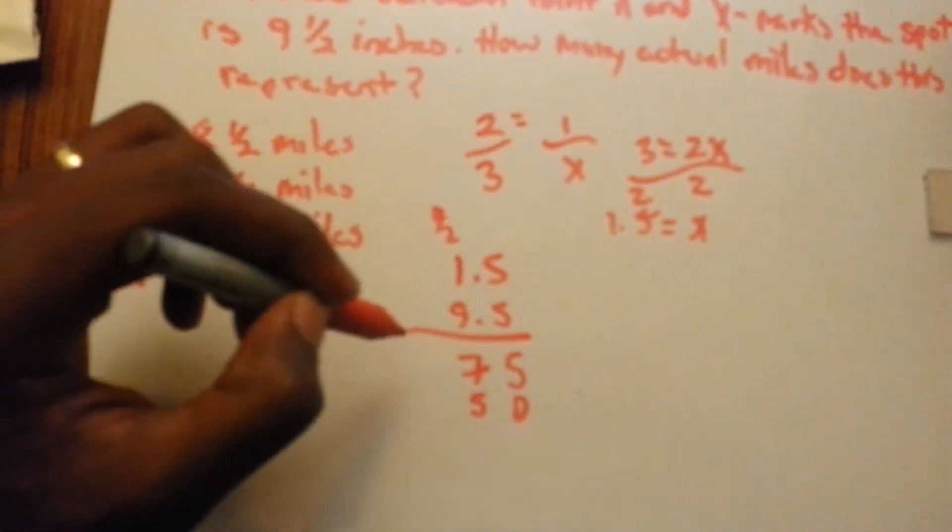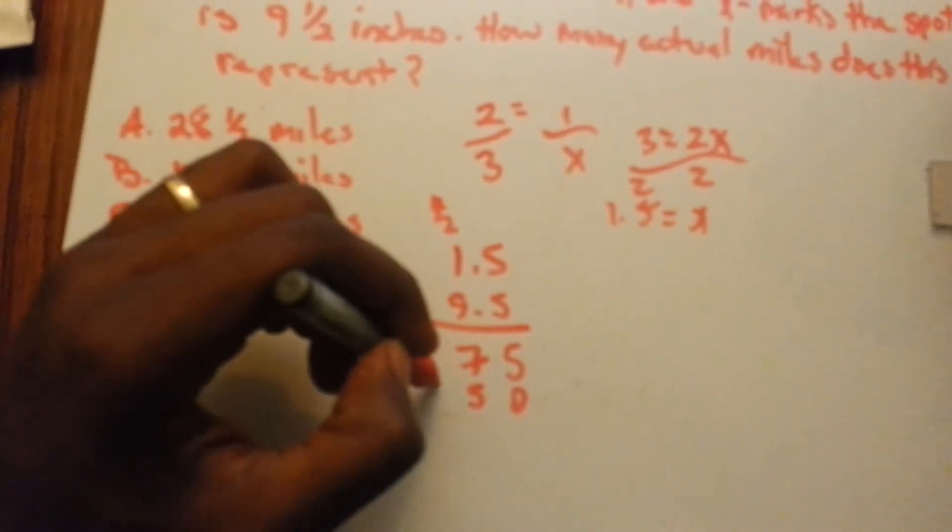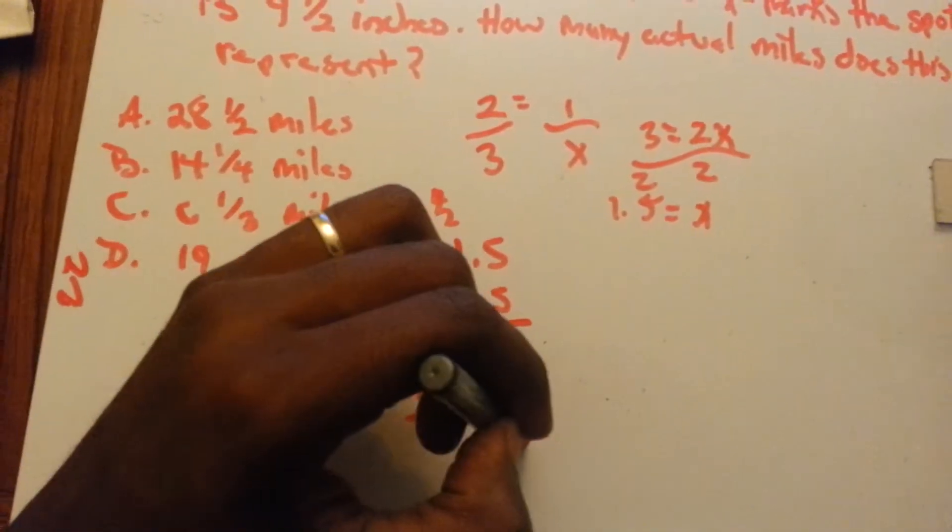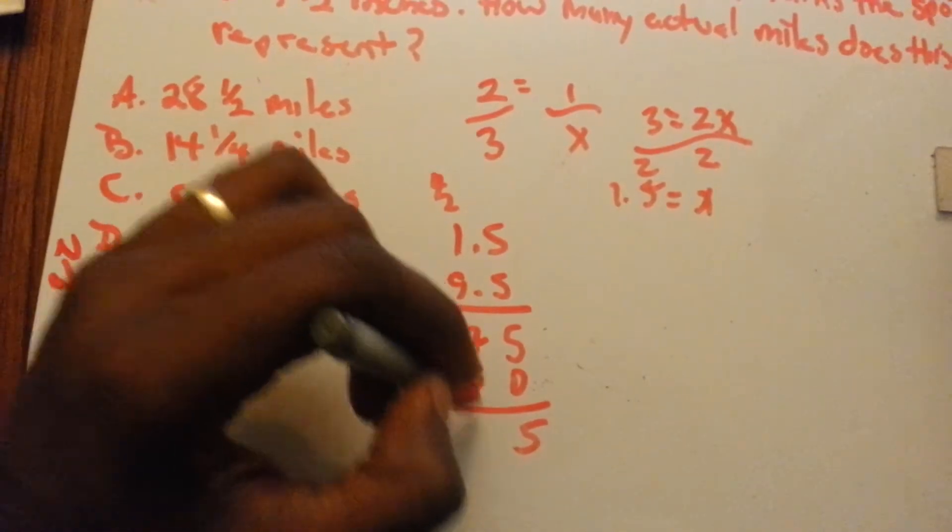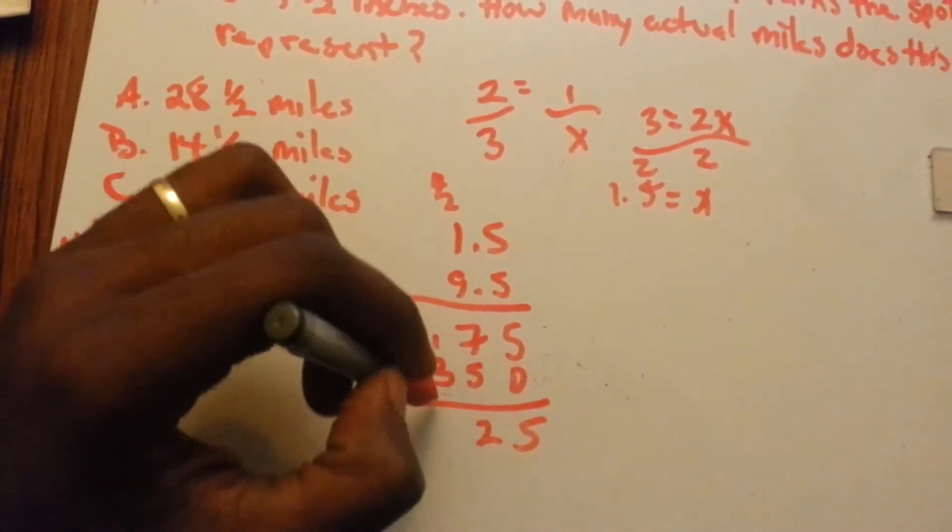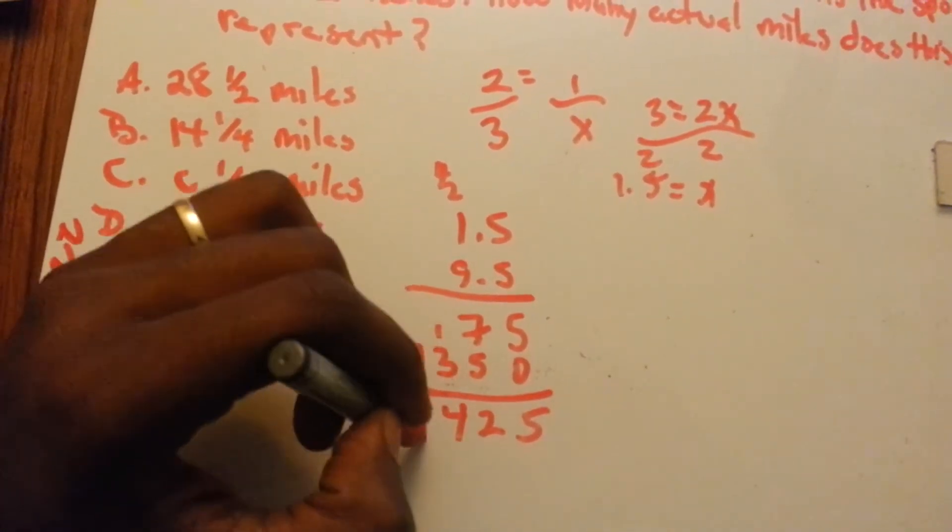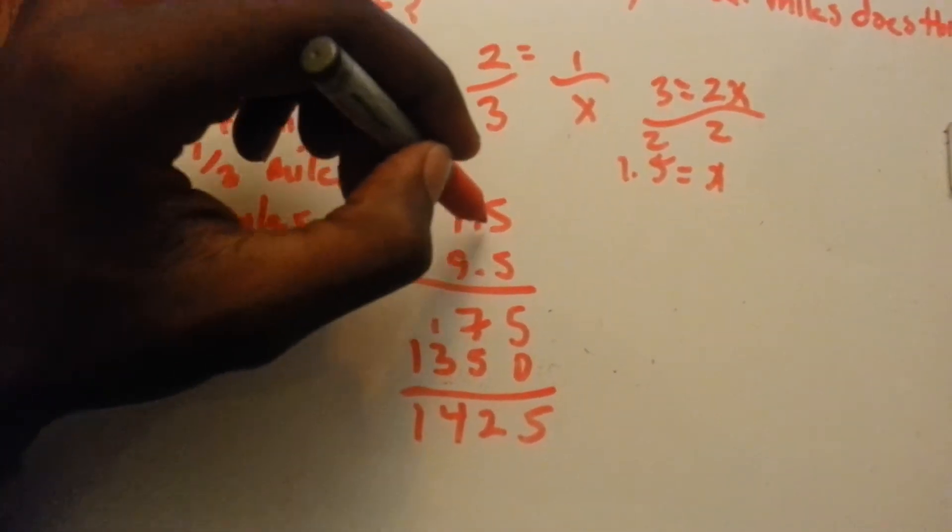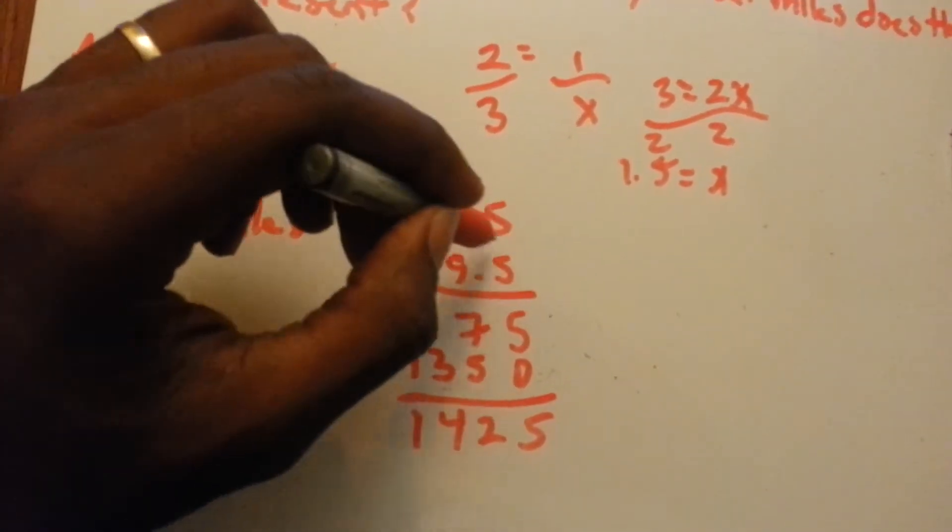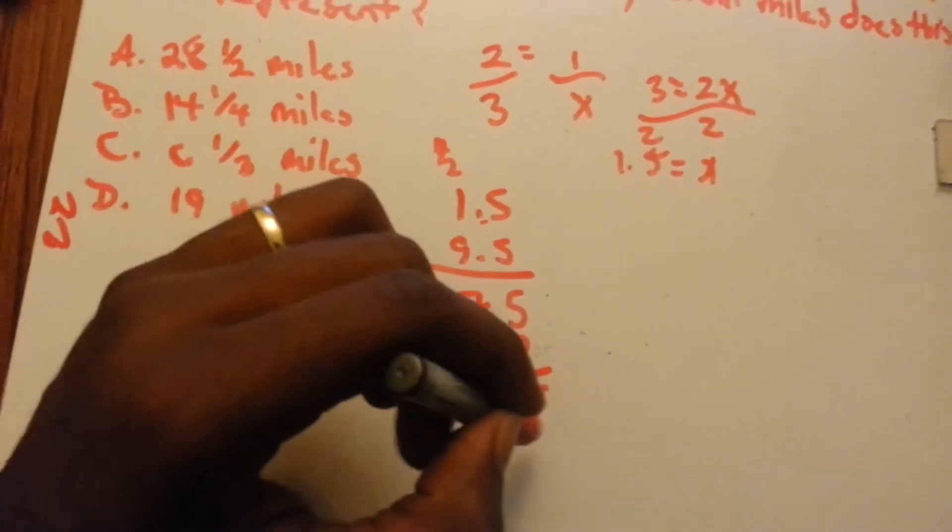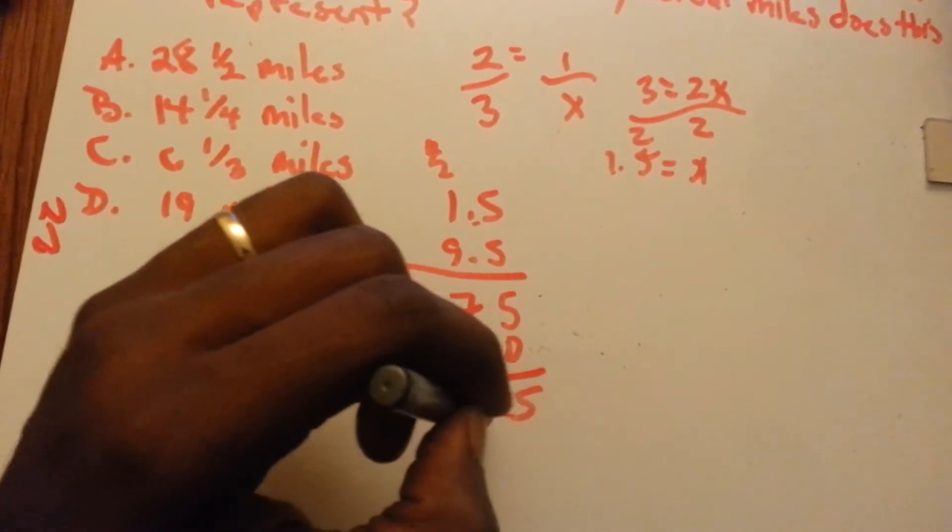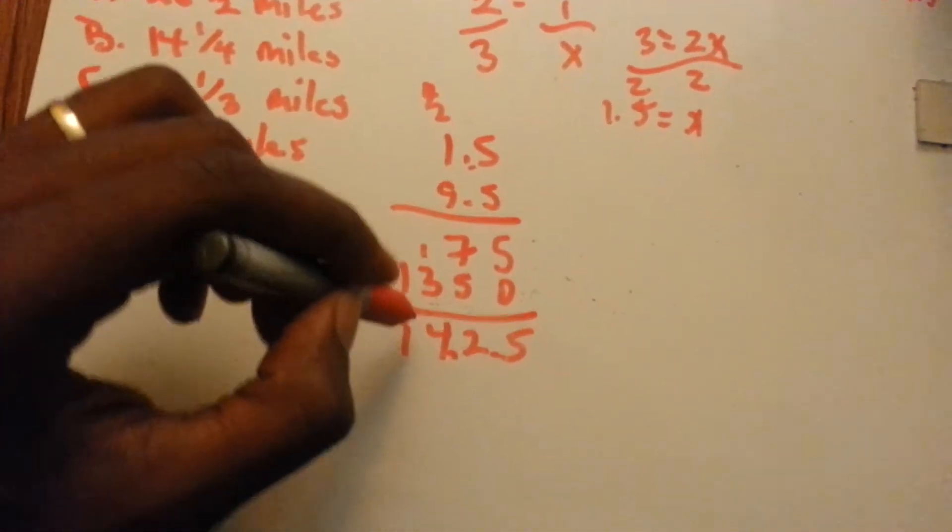carry the 4, 9 times 1 is 9, plus 4, 13, 5, 5 plus 7, 12, carry the 1, 4, 14. 2 spaces in our factors, 1, 2, decimal point 2 spaces, 1, 2, 14.25,